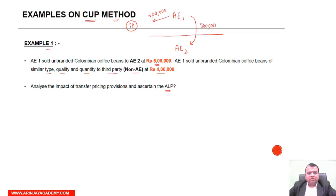Now, the transaction between AE-1 and AE-2 — is it a controlled transaction or an uncontrolled transaction? It is a controlled transaction. The transaction between AE-1 and the third party is what? It is an internal CUP.